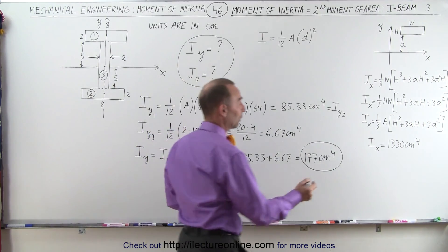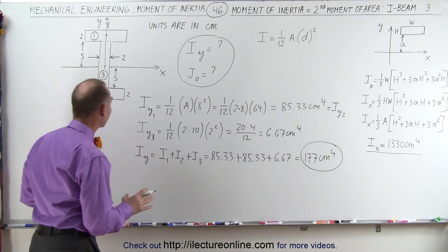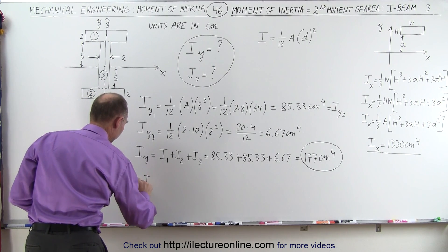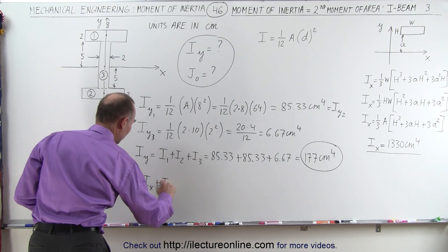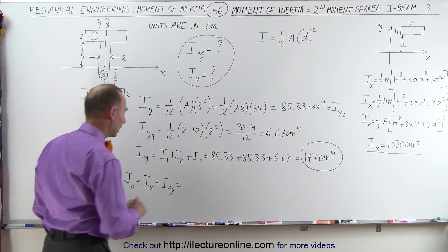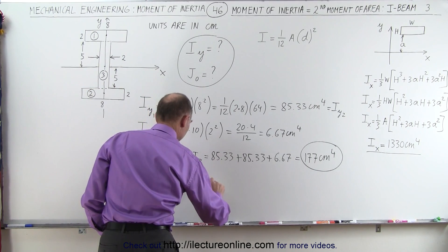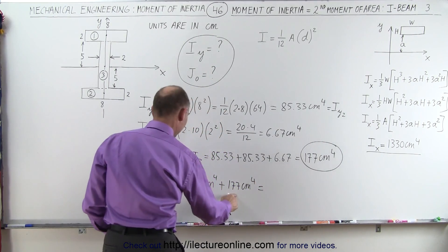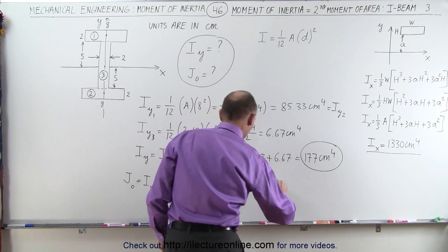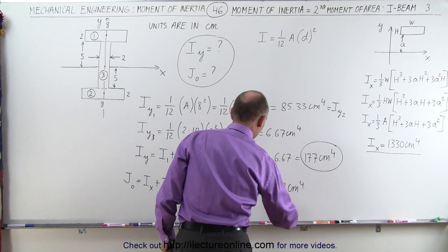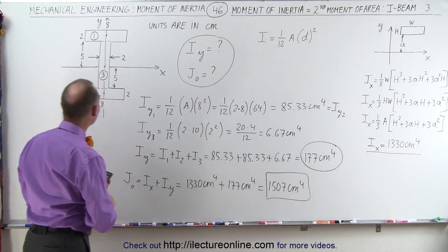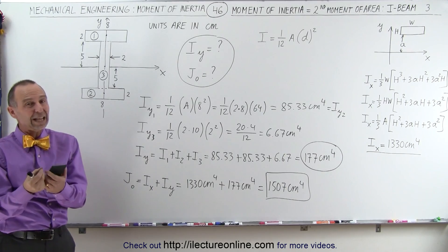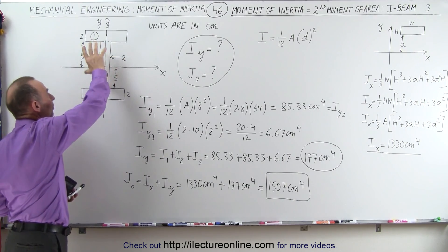Now we're going to add that to what we found last time, because to find the moment of inertia relative to the origin, we simply add the moment of inertia relative to the X-axis plus the moment of inertia relative to the Y-axis. Adding those together gives plus 177 centimeters to the fourth power, which equals 1507 centimeters to the fourth power. This is the moment of inertia of the I-beam relative to the origin, also known as the second moment of area, which gives an indication of the resistance to torsion you can place on the I-beam.